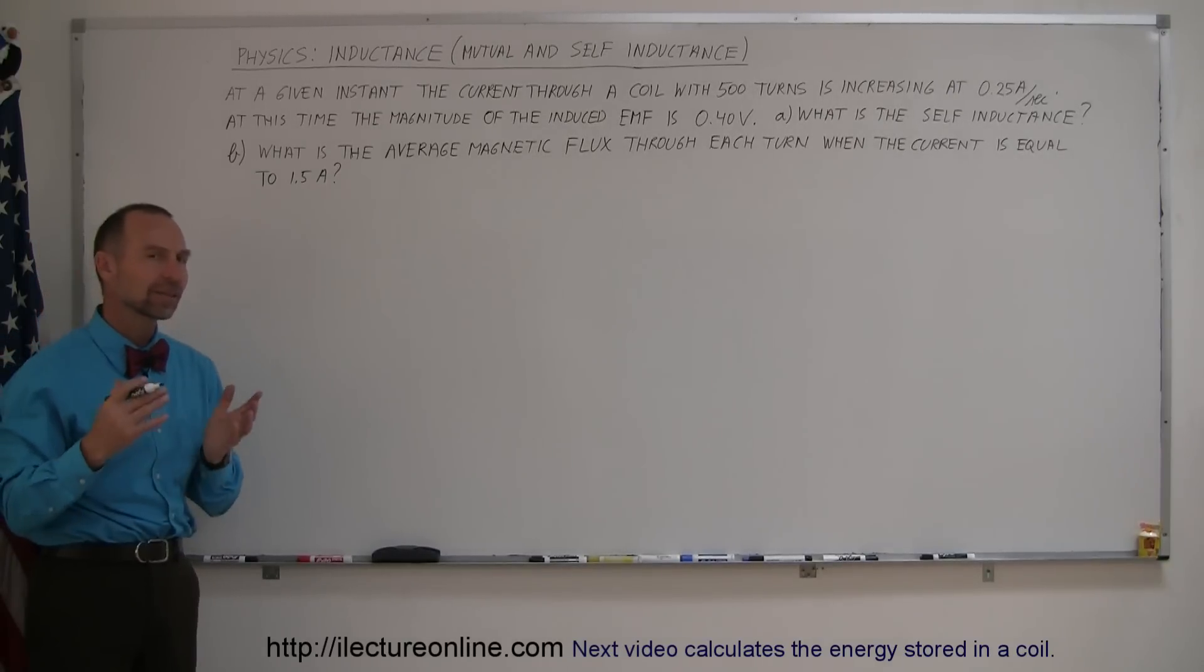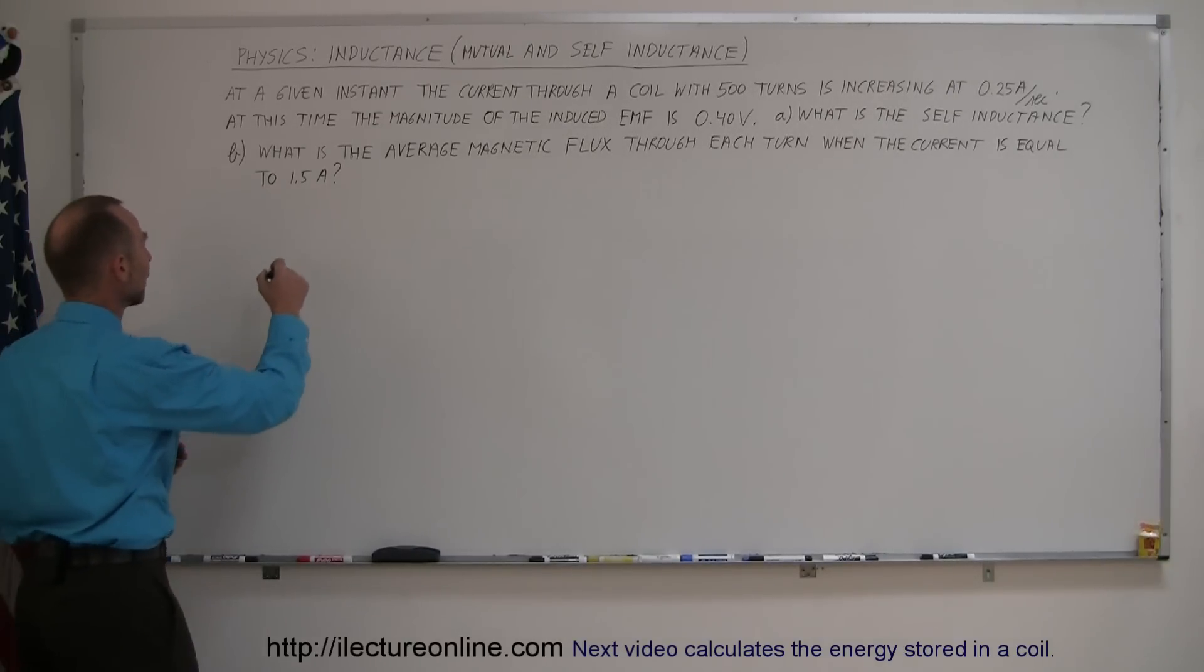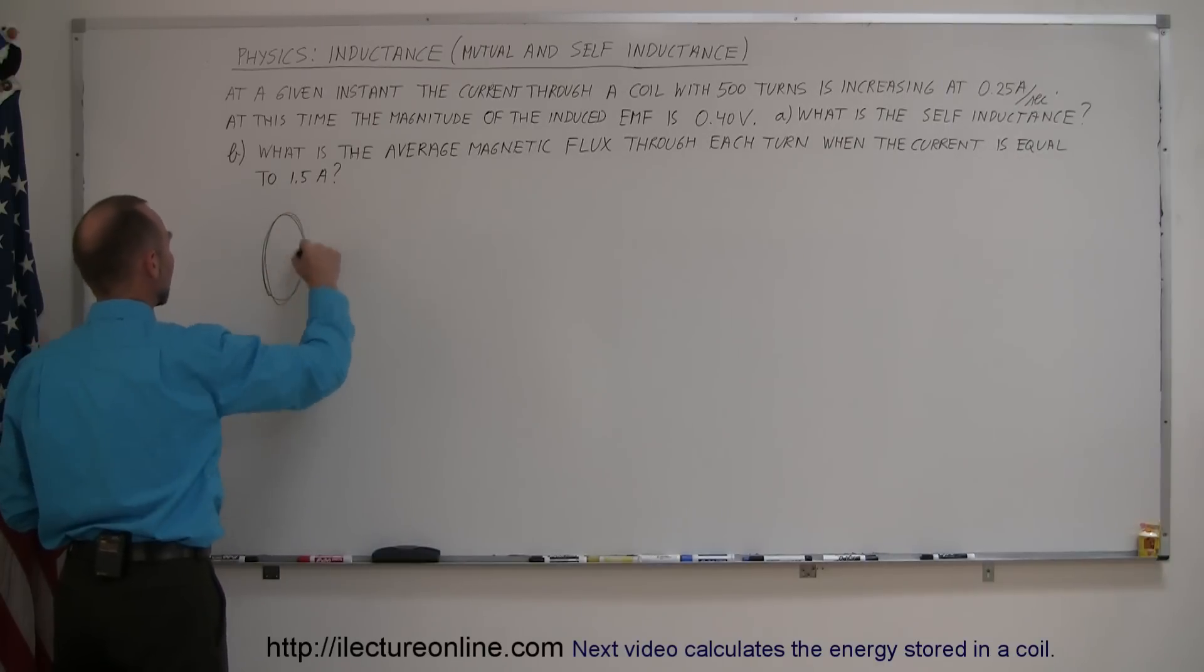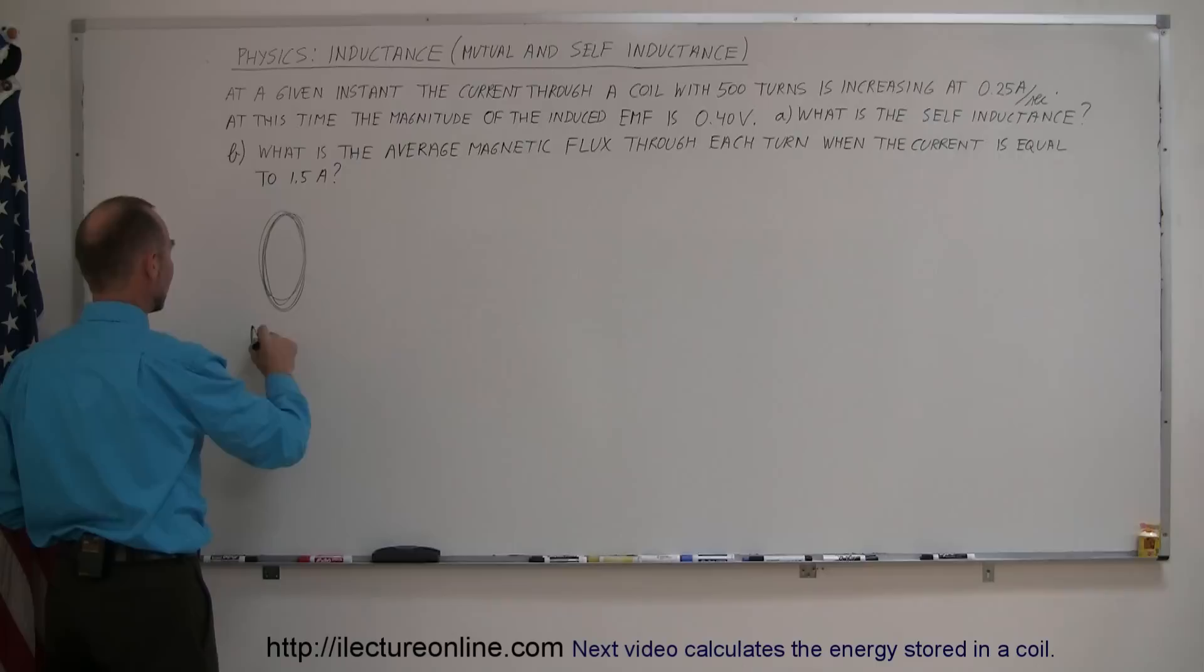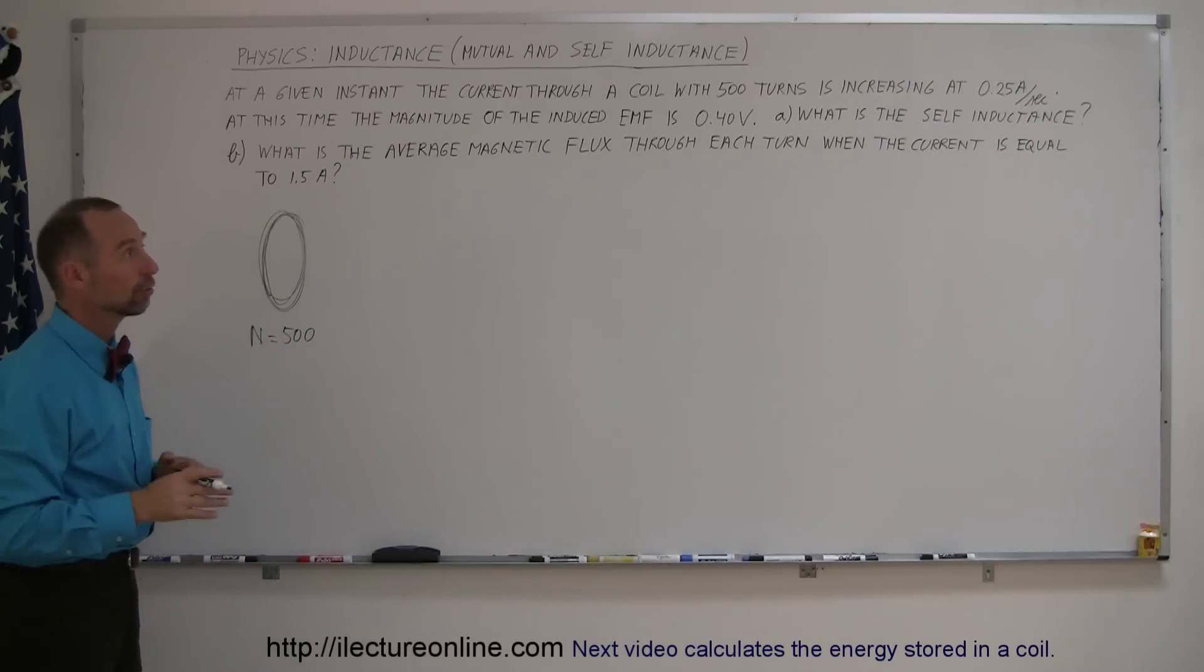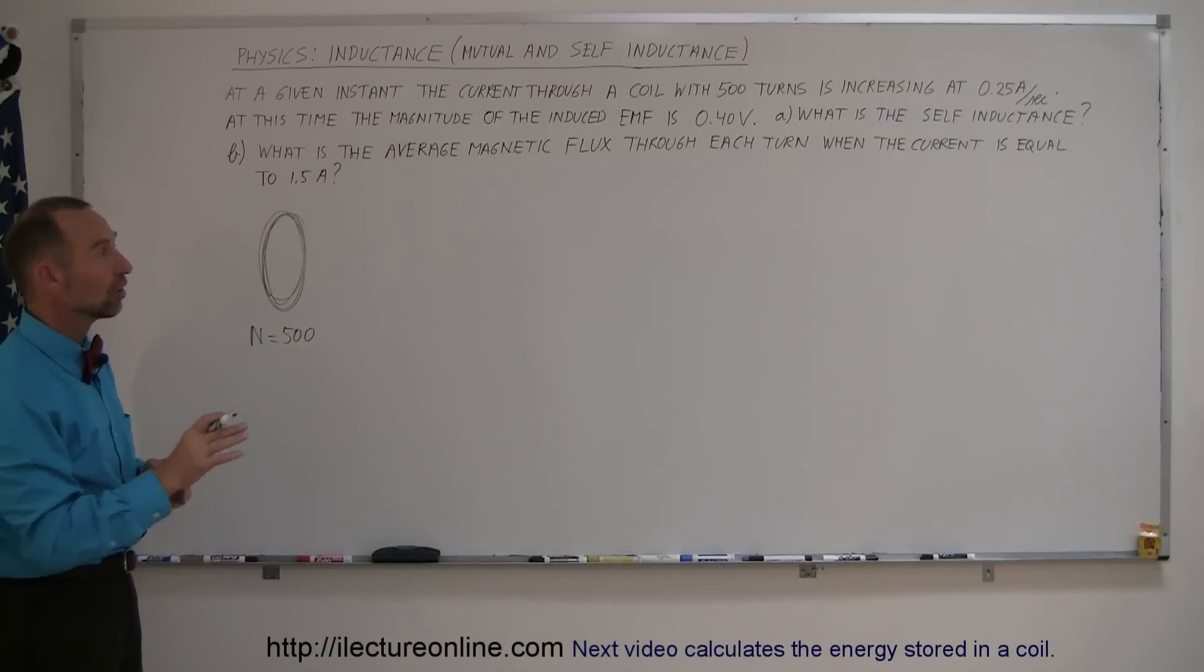All right, so let's draw a picture of that, get a feel for it. So let's say we have a coil. There's a coil. And the coil has a number of turns. So N is equal to 500 turns. There's a current flowing through the wire and the current is also changing.